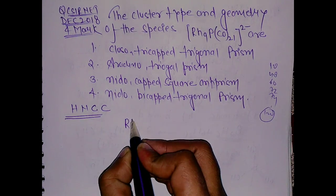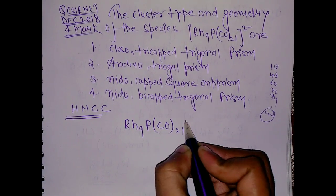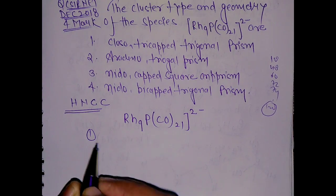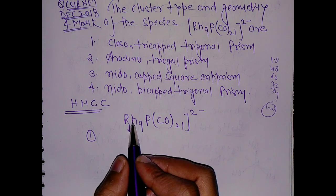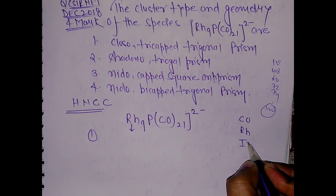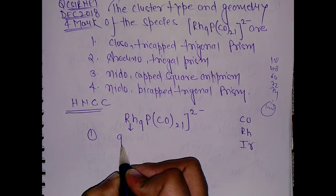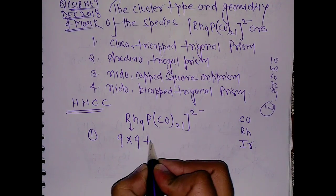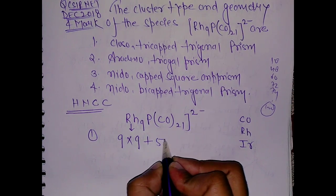Let's start. We have this compound Rh9P(CO)21 with 2- charge. In the first part, you have to calculate the total valence electron count. Rhodium comes in the family of cobalt, rhodium, and iridium. The total valence electron count is 9, so you can write 9 times 9.